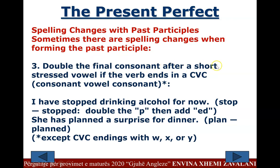Double the final consonant after a short stressed vowel if the verb ends in CVC (consonant-vowel-consonant). Example: 'I have stopped drinking alcohol.' — stop → stopped (double the P, then add -ED). 'She has planned a surprise for dinner.' — plan → planned. This rule does not apply if the CVC pattern ends in W, X, or Y.